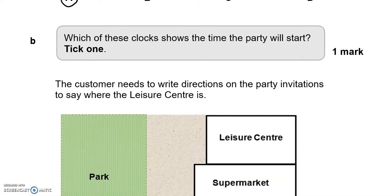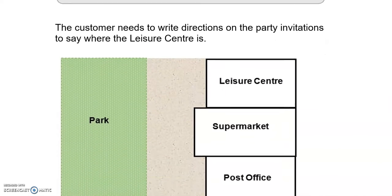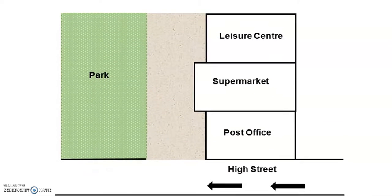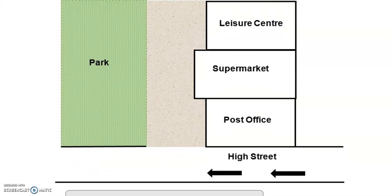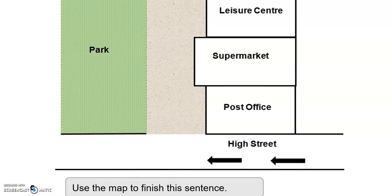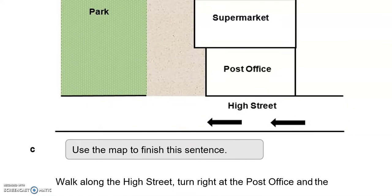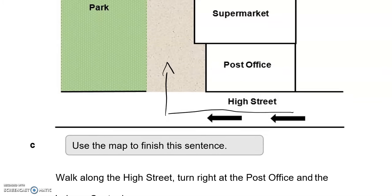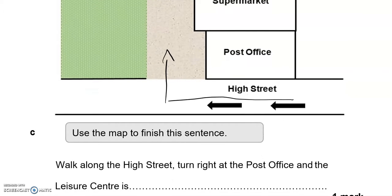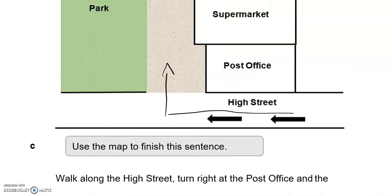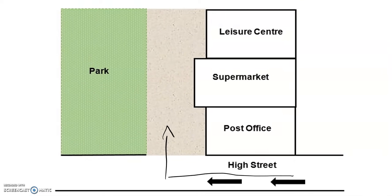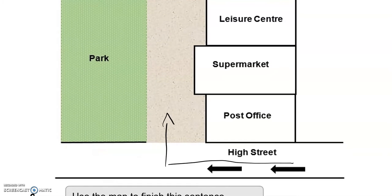The customer needs to write directions on the party invitation to say where the leisure centre is. Using the map, finish this sentence: walk along the high street, turn right at the post office, and the leisure centre is on the right after the supermarket.